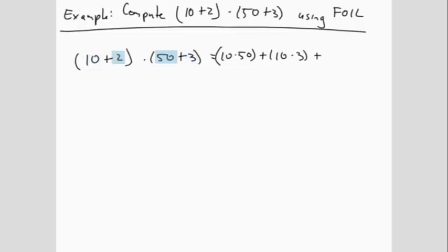Plus inner, which is the inner two values, 2 times 50. Plus last, which is the last of each pair, 2 times 3. Equals...